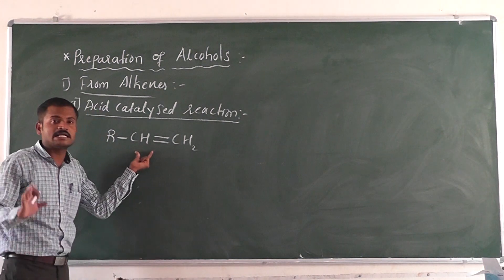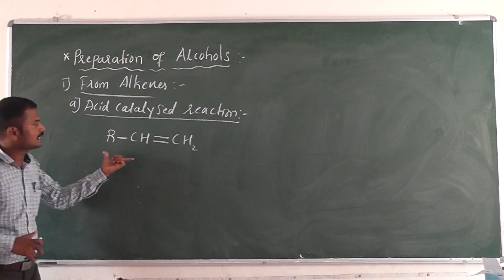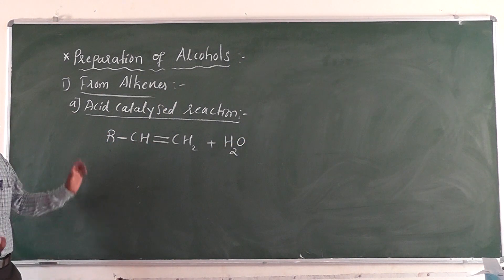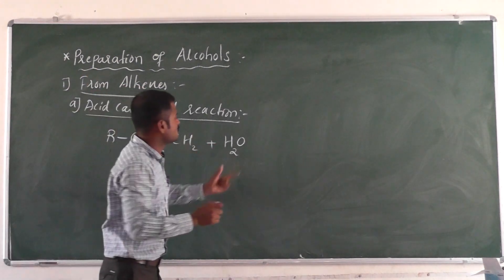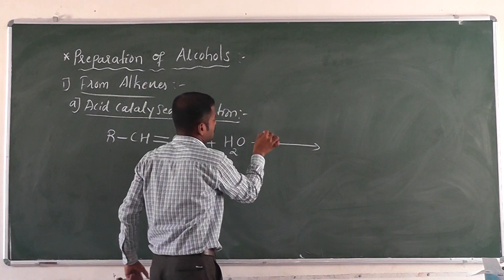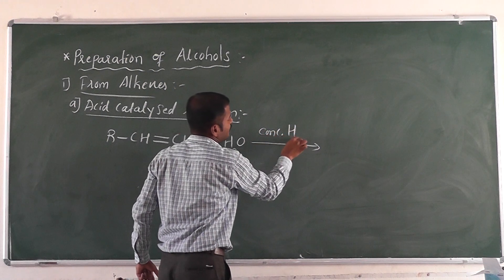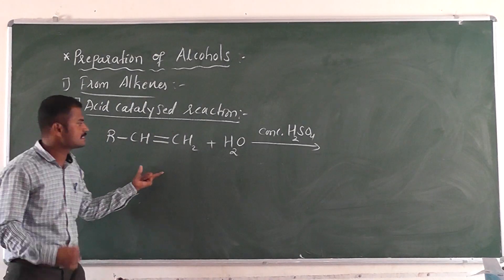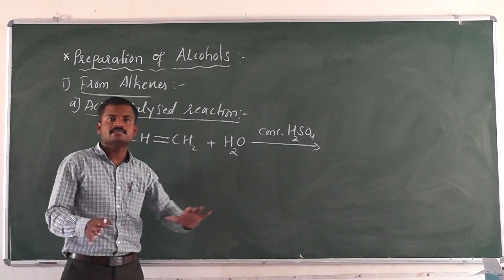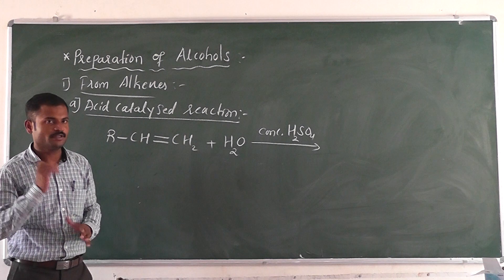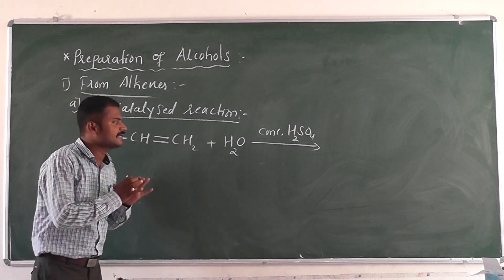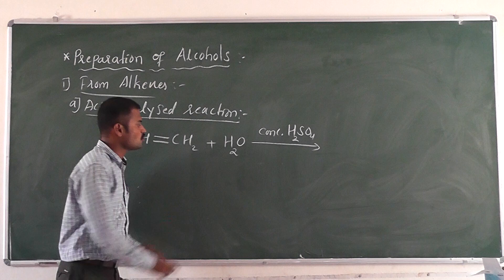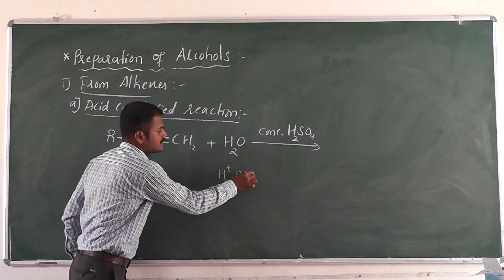When this alkene is treated with water — acid catalyzed hydrolysis — we add water along with concentrated sulfuric acid. In the acid catalyzed hydrolysis, when the alkene is treated with water in the presence of concentrated sulfuric acid, the reaction takes place according to Markovnikov's rule. H₂O gives H⁺ and OH⁻ ions.